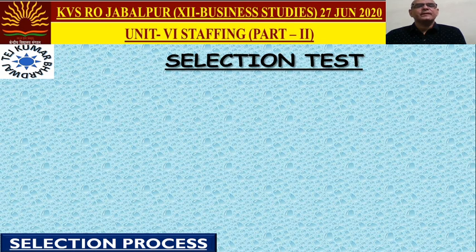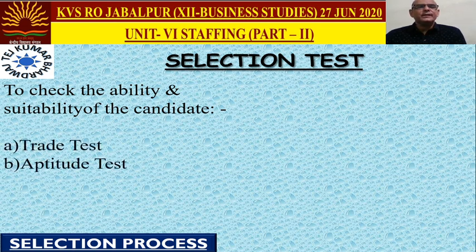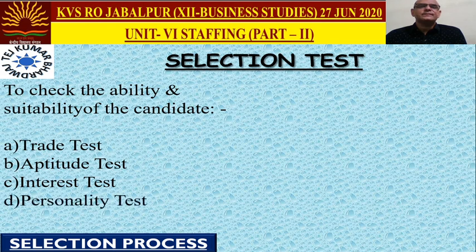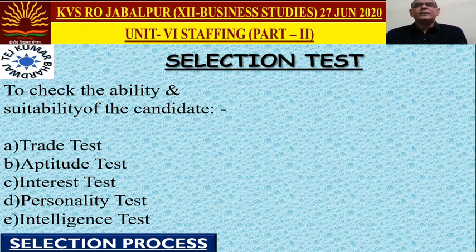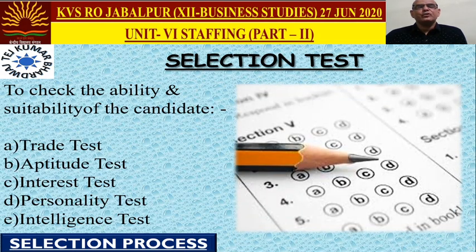After primary screening, the most important step is the selection test. Selection tests are conducted to check the ability and suitability of the candidate for the organization and the job. Generally, trade test, aptitude test, interest test, personality test, and intelligence tests are conducted. There may be a direct question asking what the five types of tests in the selection process are, so understand each type carefully.